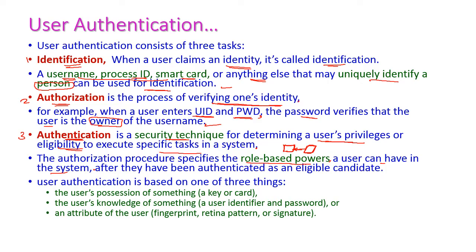After they have been authenticated as an eligible candidate, consider if a person is allowed to use a printer but is also trying to access the scanner — that would be unauthorized access. So the authentication will verify whether the person is accessing only the printer or not. This is called authentication.